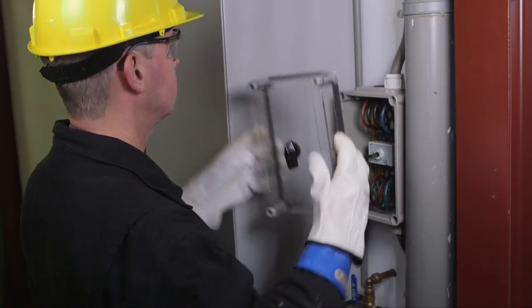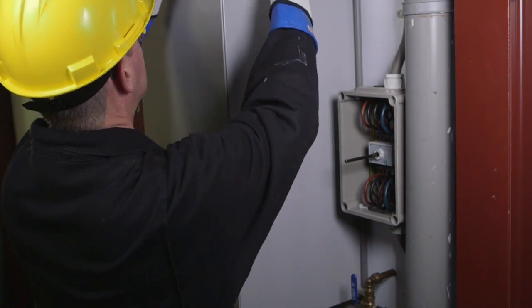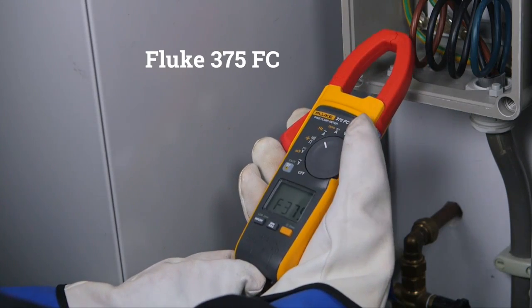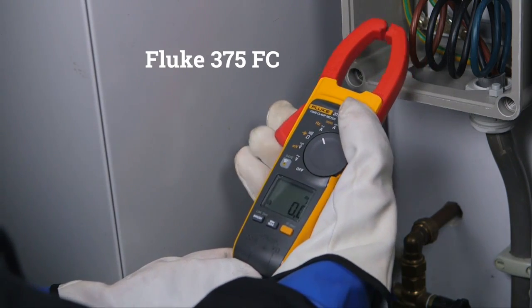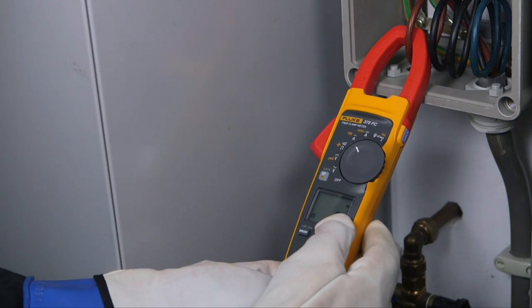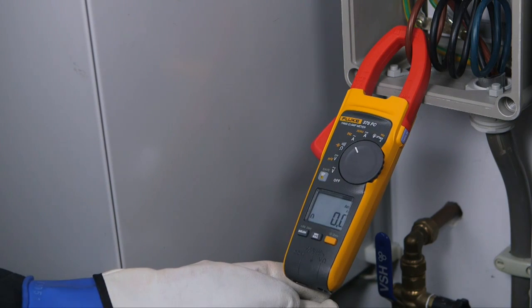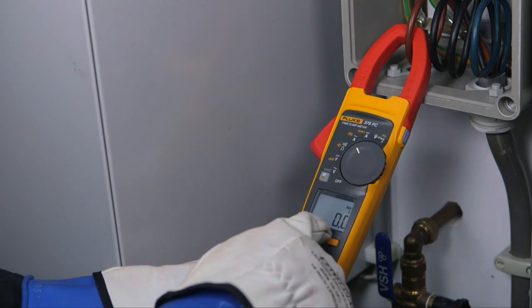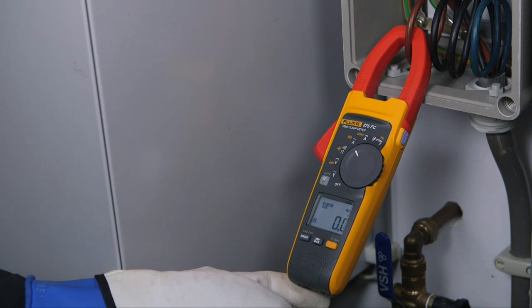The Fluke 375 FC is a high-performance clamp meter with wireless communication and logging capabilities. With the integrated variable frequency drive low-pass filter, you are able to take accurate motor drive measurements. Helpful features like recording minimum and maximum values are a must-have for troubleshooting.